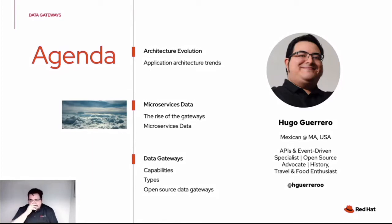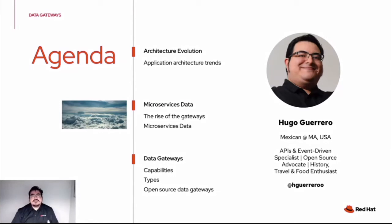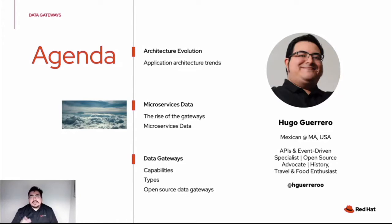My name is Ugo. I'm Mexican, currently based in the Boston area in Massachusetts, here in the United States. I'm currently working with Red Hat as an API and messaging or event-driven specialist. I've also been an open source advocate since I first started working with JBoss enterprise application server around 2004, so it has been a long journey working with open source software. I'm also a history and travel enthusiast — I really enjoy traveling as well as new food and street food around the world. Here's my Twitter handle if you want to follow the conversation.